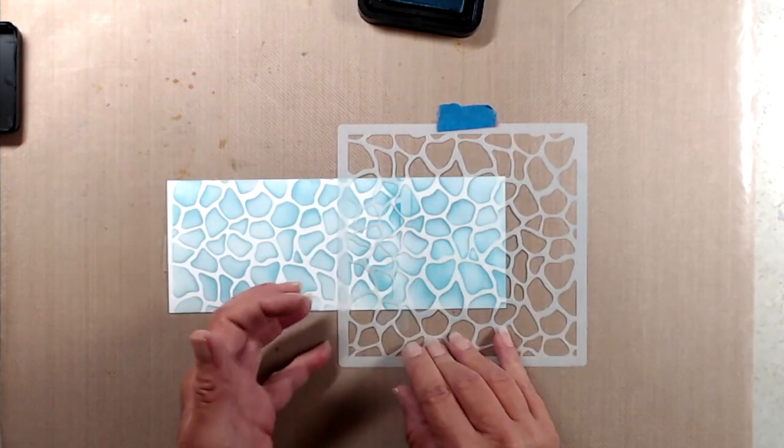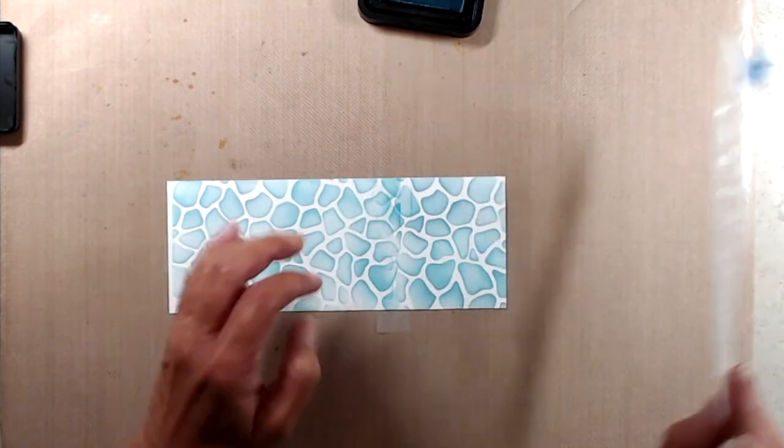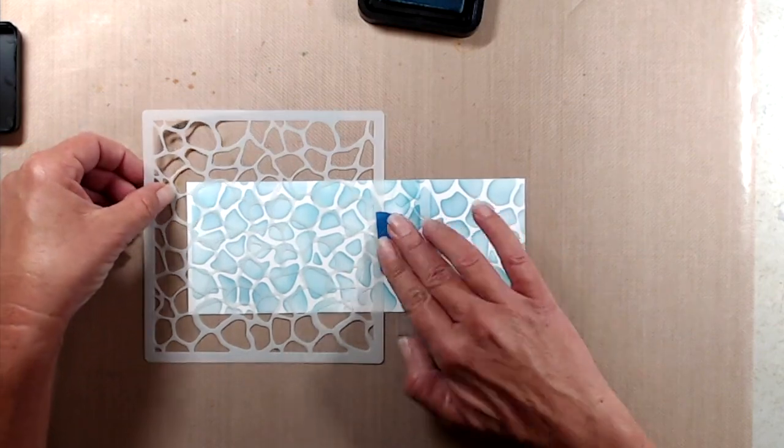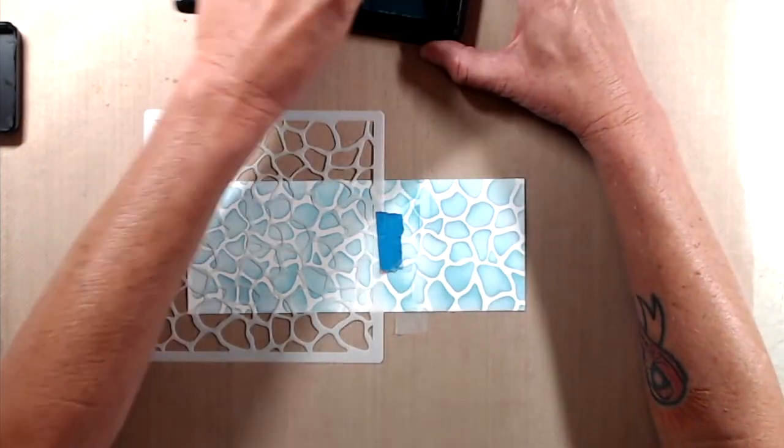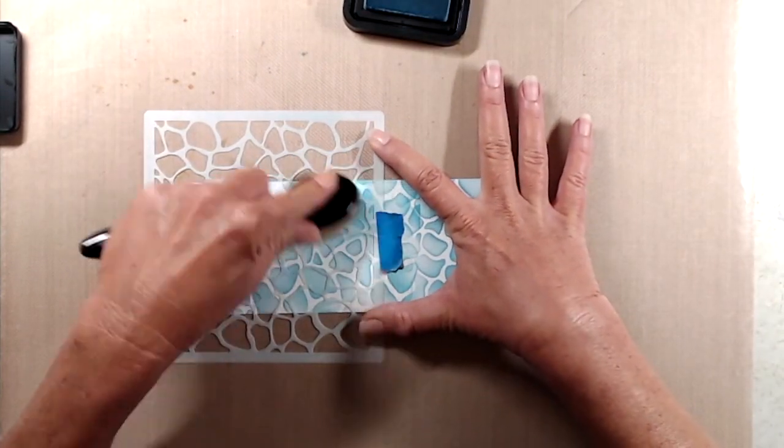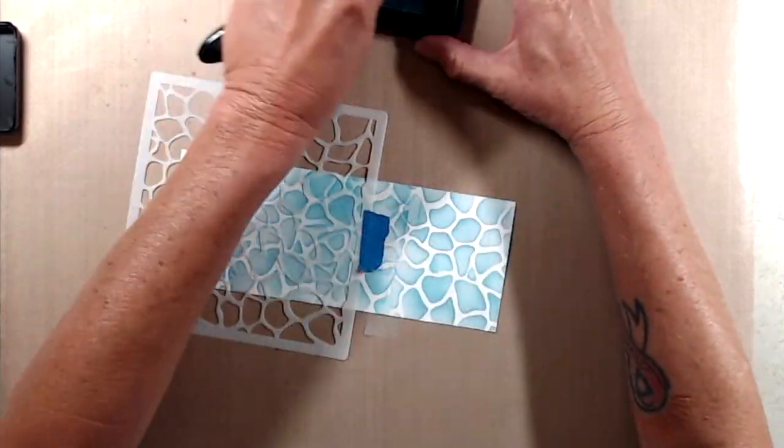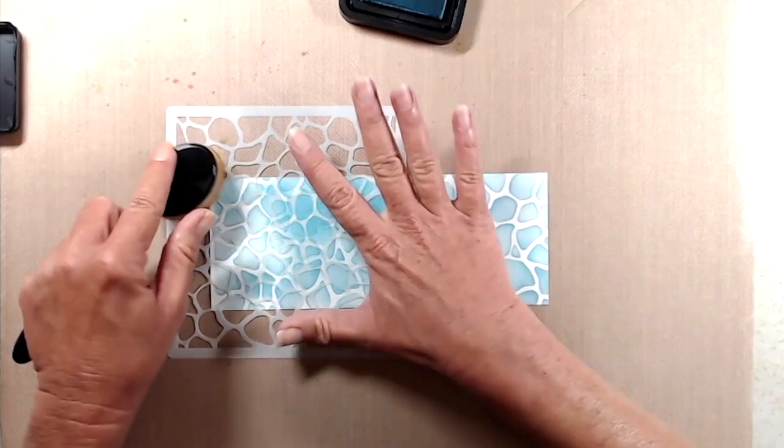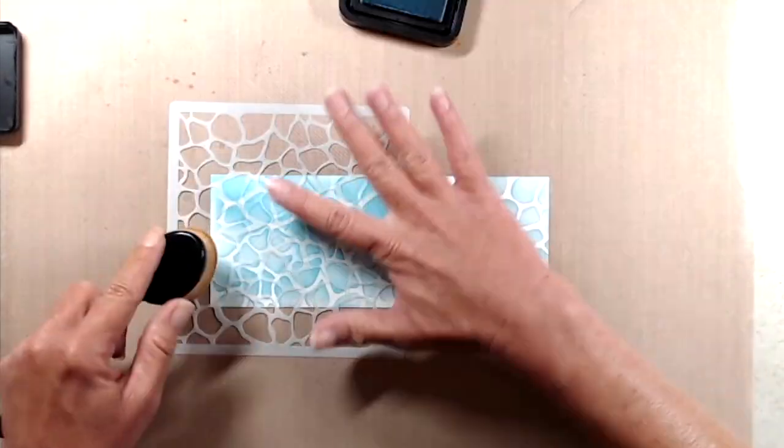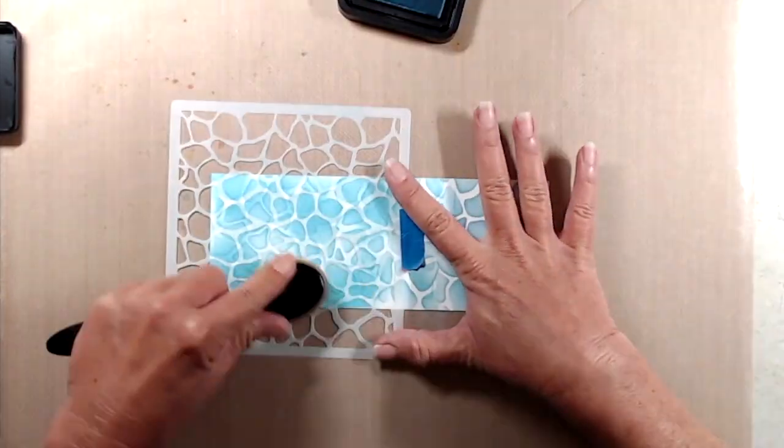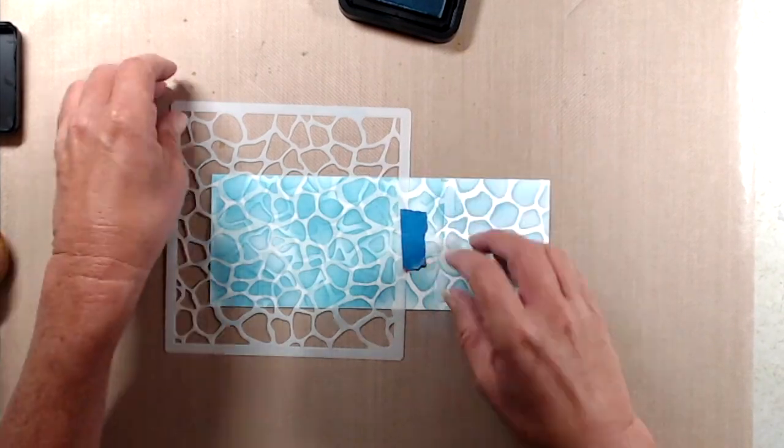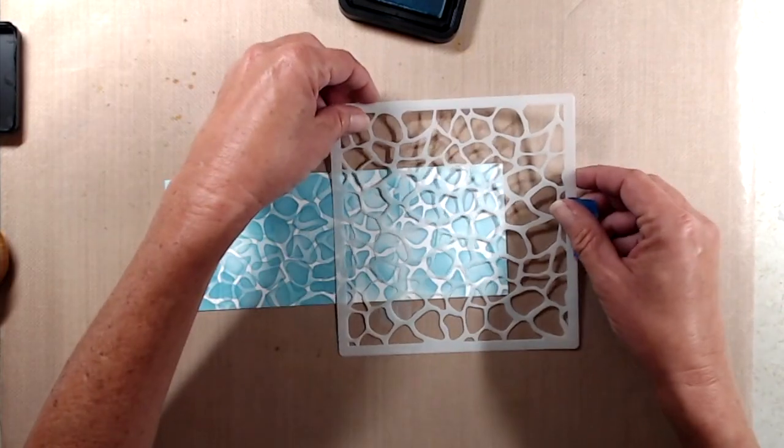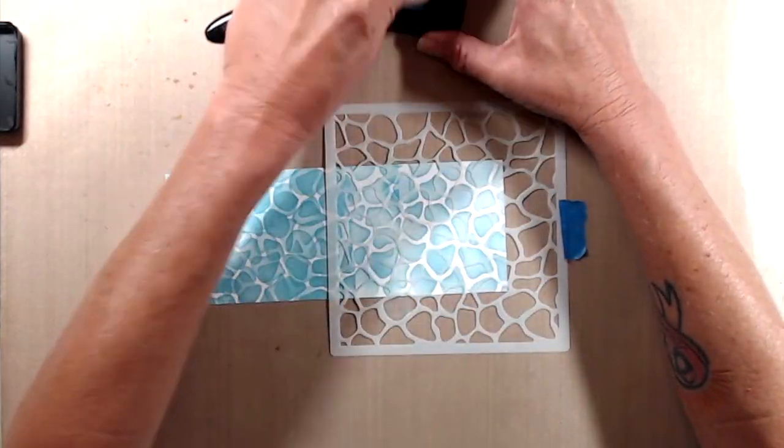And the next step is how you start to get the pool water look. I lifted up the stencil. I put it back to the left side of the card, but I turned it. So now you'll notice that my blue painter's tape is on the right-hand side. And then I did a second coat of ink on the left side of the card panel. I shifted the stencil over. I didn't turn it. I just shifted it and stenciled on the right side of the card.